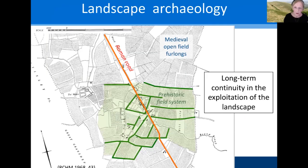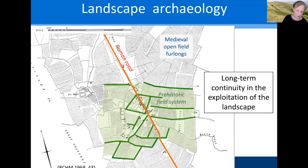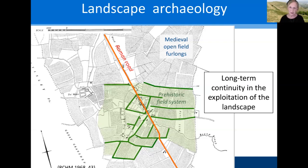So for none of those three questions is there an answer from the documentary evidence. We don't know if there's a change in the volume of migratory flow, we can't tell whether people came from somewhere different, and we can't tell if they had a significant cultural impact. Moving on to the archaeology, I'm going to look at three aspects: landscape archaeology, which is my own specialism; burial archaeology; and material culture — the things that people used.